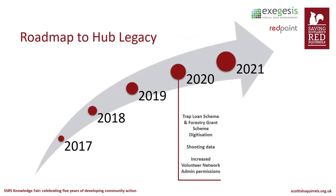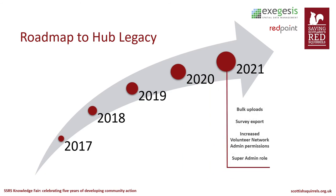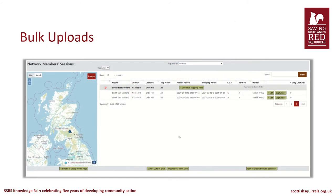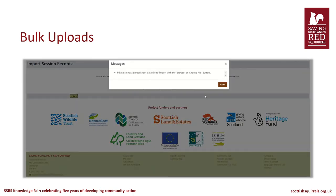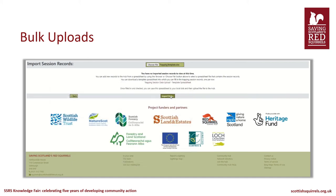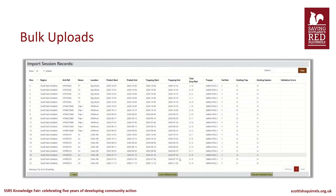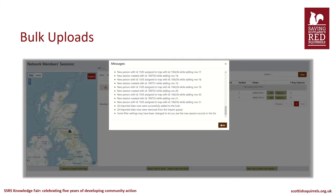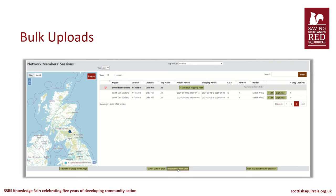Moving on to the current year 2021, a lot of development work has taken place to help prepare us for the legacy phase. In the summer we added bulk upload functions to our trapping and shooting pages, which allows admins to collect control data from their group and upload it to the Hub without having to manually enter every record one by one. This is useful for groups with a high volume of trapping data, or where group members are not so tech-savvy and would like somebody to process their data on their behalf.